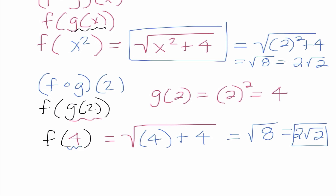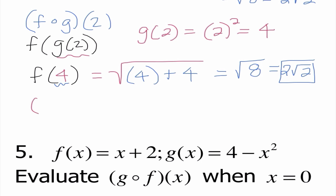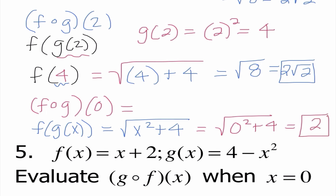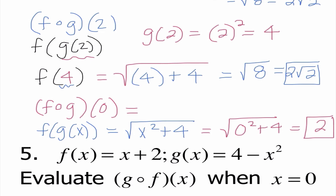Our last part of problem four is f of g of 0. Using our shortcut, we already determined f of g of x equals the square root of x squared plus 4. Substituting 0 for x gives the square root of 0 squared plus 4, which is the square root of 4, or 2. You could use the alternate method as well and get the same answer.